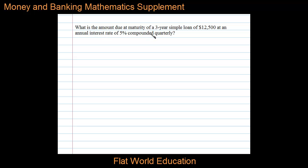What is the amount due at maturity of a three-year simple loan of $12,500 at an annual interest rate of 5% compounded quarterly?